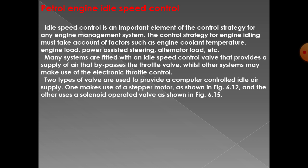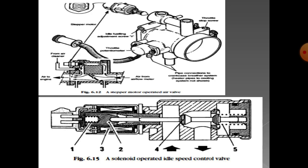There are two types of valves used to provide a computer-controlled idle air supply. One makes use of a stepper motor, as shown in figure 6.12, and the other uses a solenoid operated valve. In the stepper motor operated air valve diagram, there is a throttle stop screw, a pipe connection to the crankcase, idle fuel fueling, a throttle potentiometer, and the stepper motor which pressurizes the air.